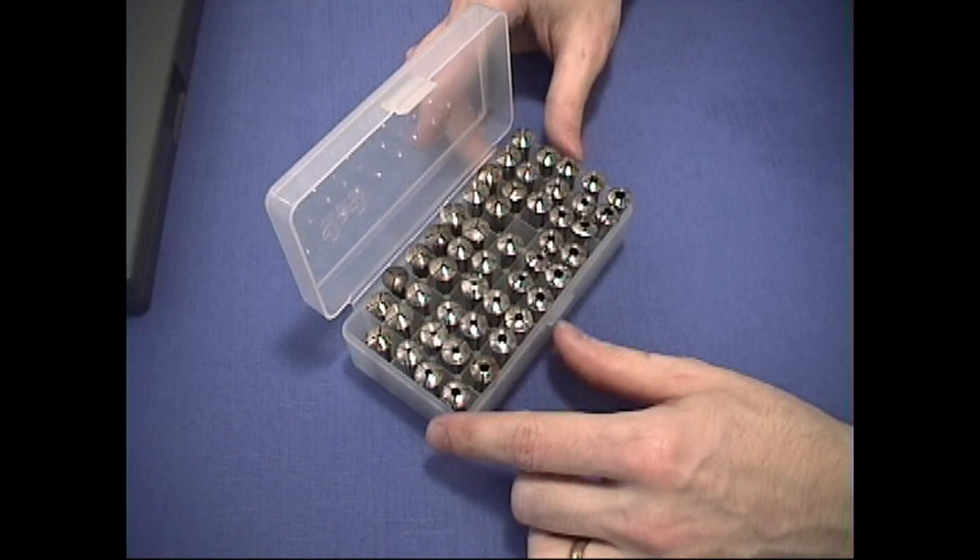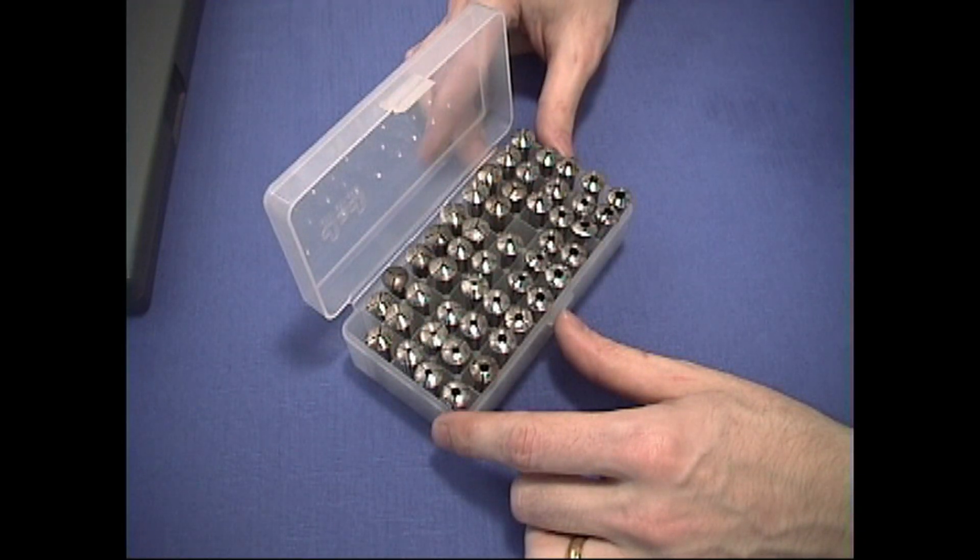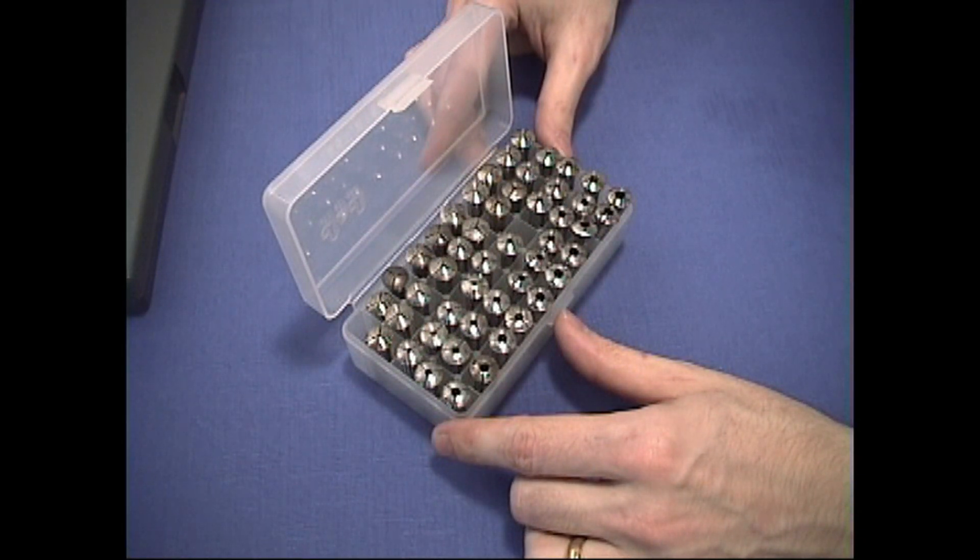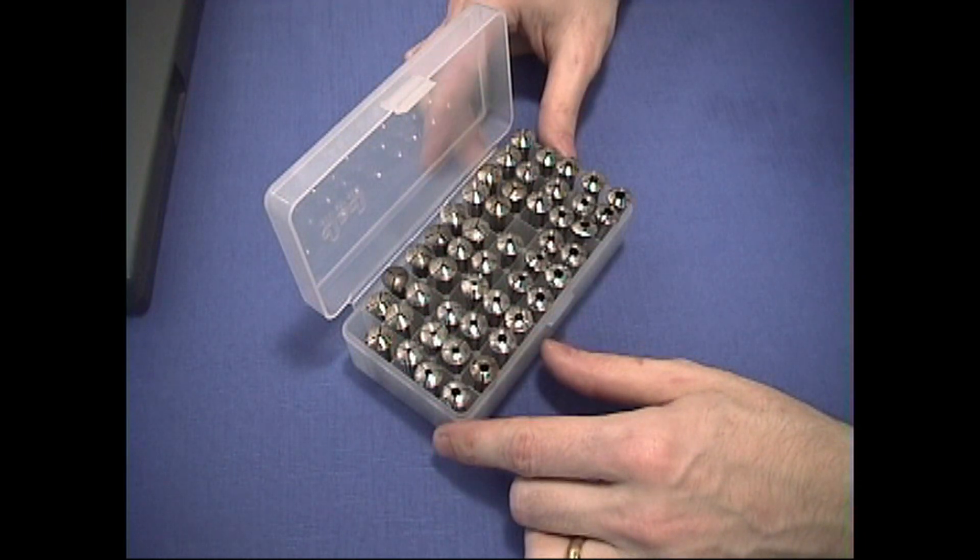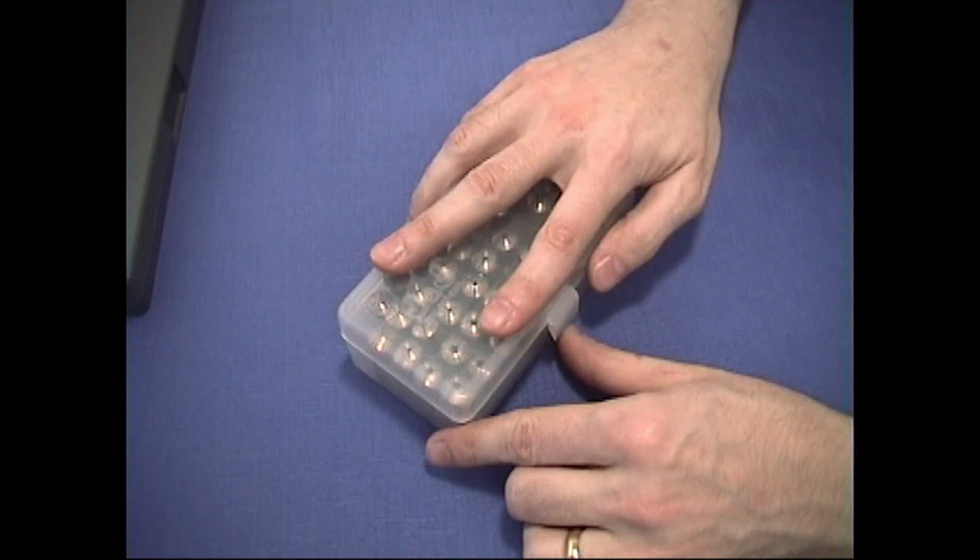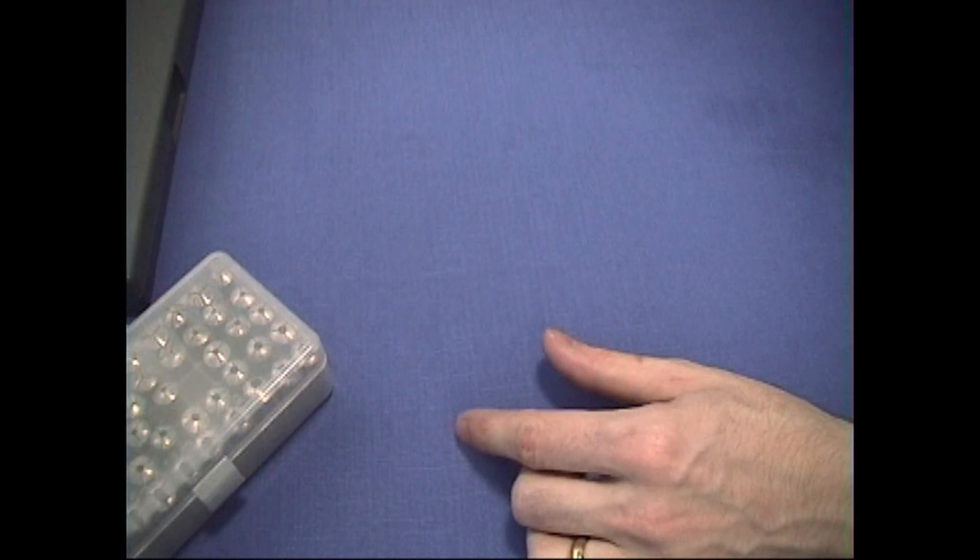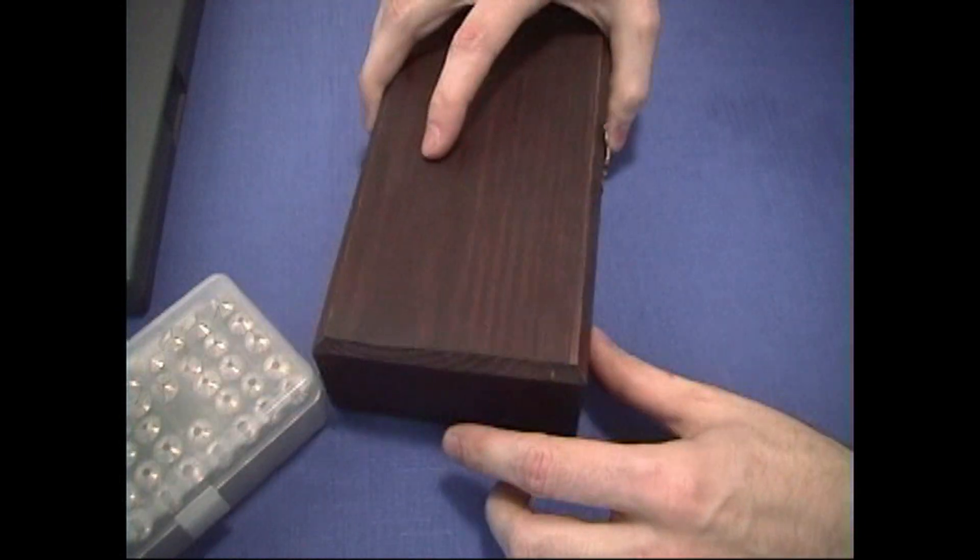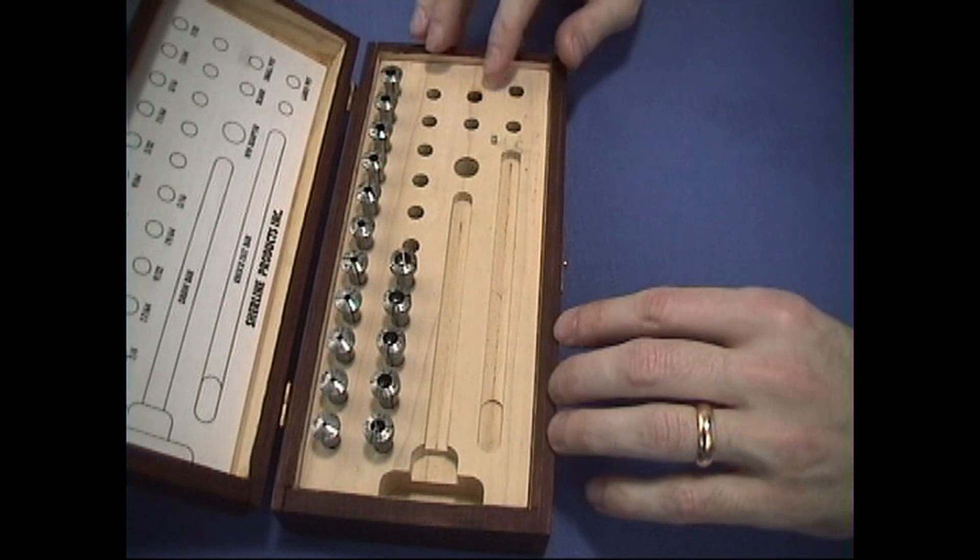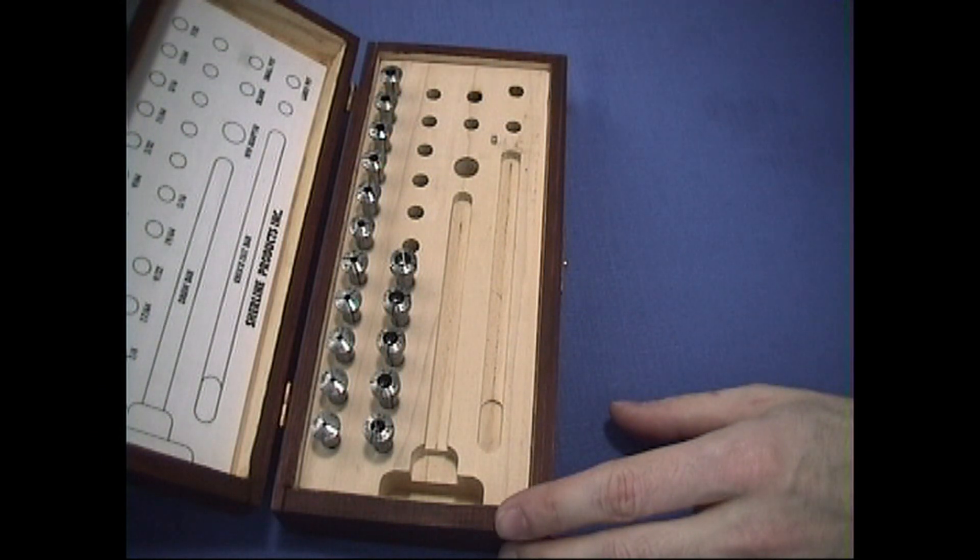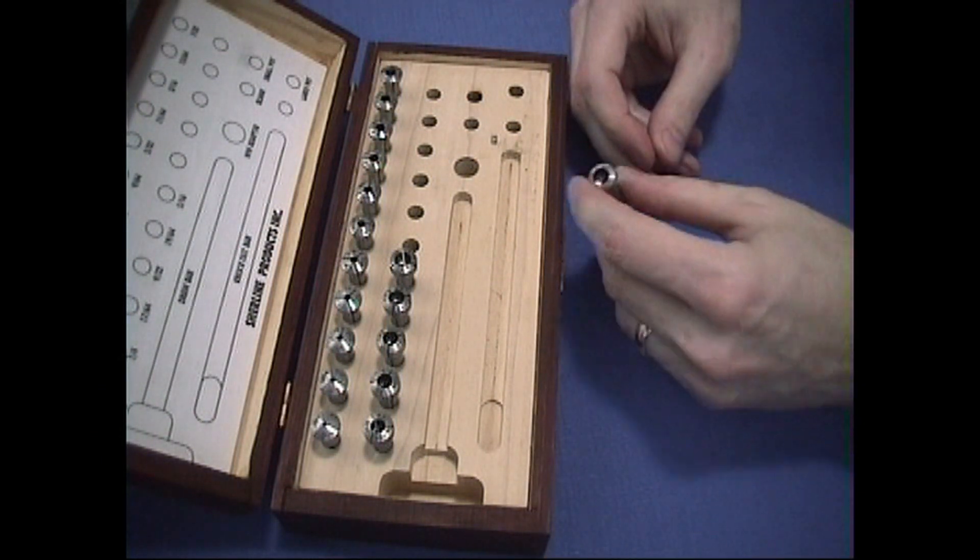A simple storage box like this—this is a box that's used to store 45 caliber bullets, but it fits very well for collets. Most prefer a wooden case like this one here because the wood case tends to absorb moisture and the collets are not touching each other.